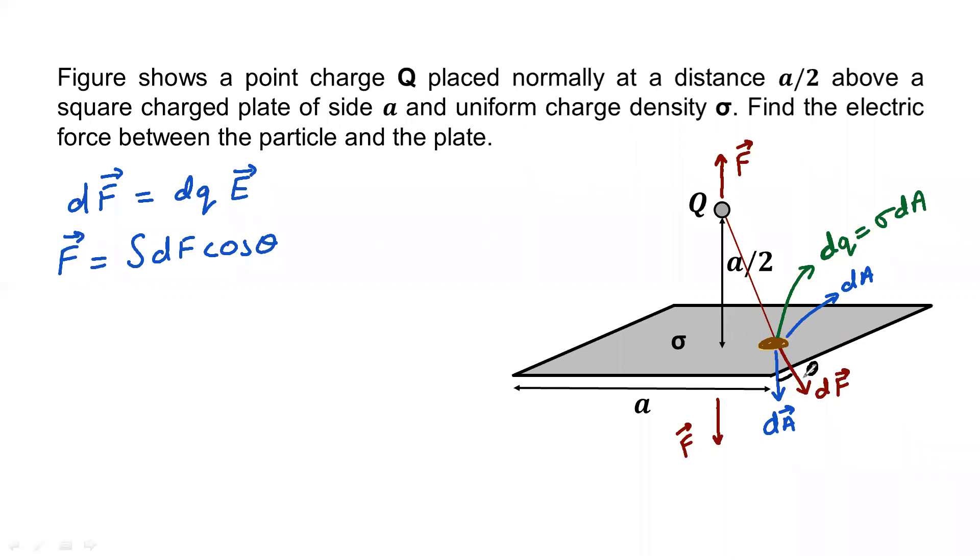Substituting the value of dF, you will get integral sigma dA times E into cos theta. You can see that sigma is a constant, so sigma comes out. What remains is integral E dA cos theta.